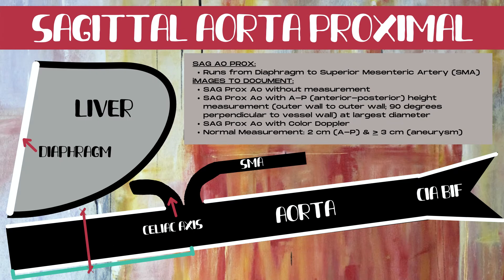For our aorta protocol, we're starting in the sagittal aorta in the proximal segment, which runs from the diaphragm to the superior mesenteric artery, or SMA. Document a sagittal proximal aorta without measurement, a sagittal proximal aorta with an AP or height measurement — outer wall to outer wall, 90 degrees perpendicular, at the largest diameter — and a sagittal proximal aorta with color Doppler. A normal measurement is two centimeters AP; greater than or equal to three centimeters is an aneurysm. Most importantly, carefully sweep medially to laterally through the sagittal proximal aorta to look for any dissections or pathology before collecting images.